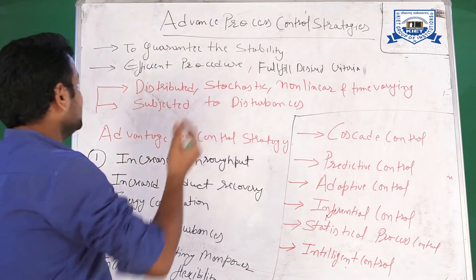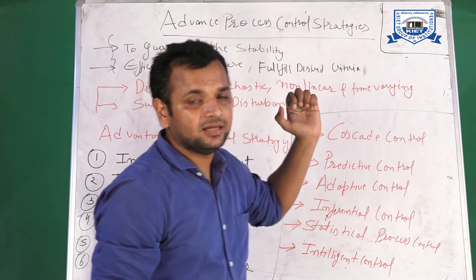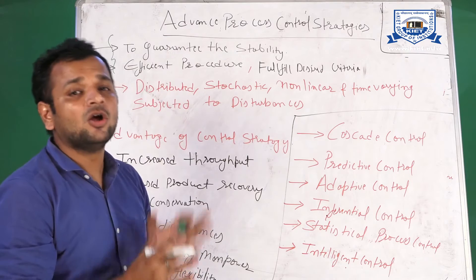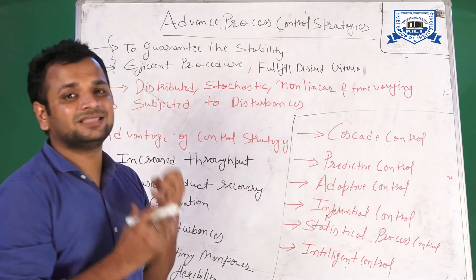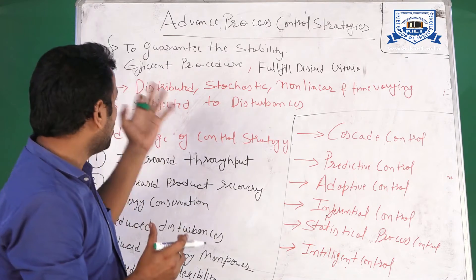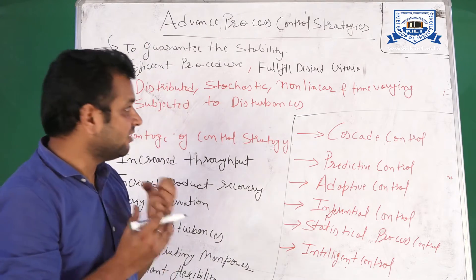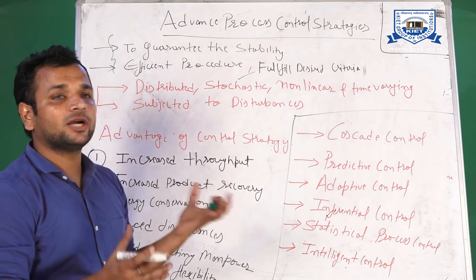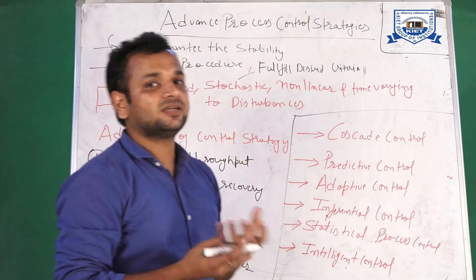Why do we use advanced control strategy? First, to guarantee stability — the output of any system should be stable and should satisfy certain transient or steady-state characteristics. It should be robust in performance, the process should be efficient according to the process behavior, and it should fulfill our desired criteria. Based on these requirements, we apply advanced process control strategies.